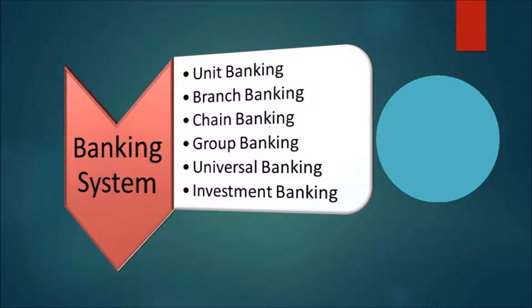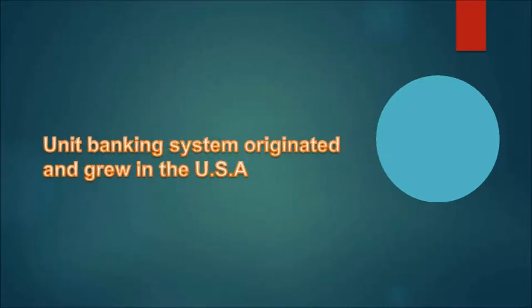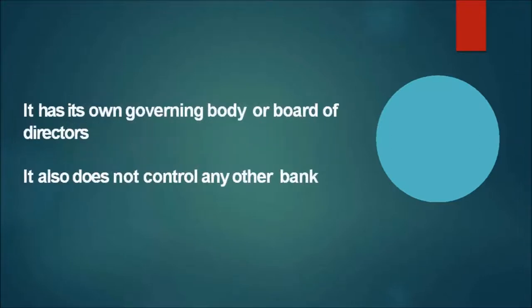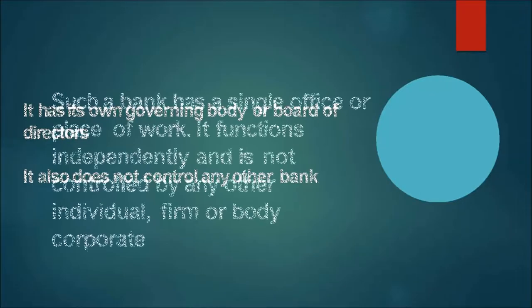There are different types of banking systems such as unit banking, branch banking, chain banking, group banking, universal banking, and investment banking. In this session we are supposed to discuss only the unit banking system. When an individual bank operates through a single office, it is called unit banking — particularly when the customer base and geographical area are relatively small. According to Solman, an independent unit bank is a corporation that operates one office and is not related to other banks through either ownership or control. Unit banking originated and grew in the USA.